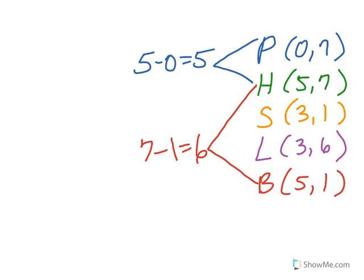Next, we can compare the bank and the school, since they share a y value of 1. So we're going to look at the x value, which gives us 5 minus 3 equals 2. The bank and school are 2 units apart.